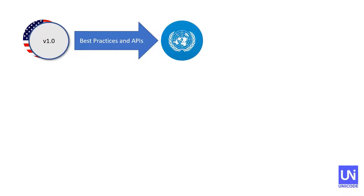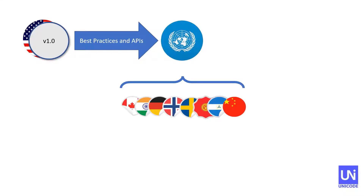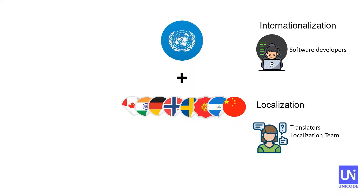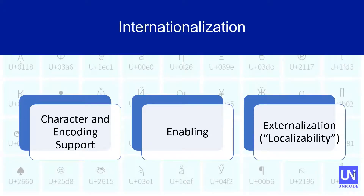Internationalized software takes a different approach. By using best practices and APIs built into modern operating environments and programming languages, you can build a single source code base that is global in nature. You can still create specific releases for specific countries or collections of languages, but you'll do it from one set of source code, greatly simplifying your development, testing, deployment, and support. This approach divides up the work needed to support languages and regions as well. Software developers do internationalization, and translators and others do the work to create the local product in a process referred to as localization. Let's take a closer look at internationalization.